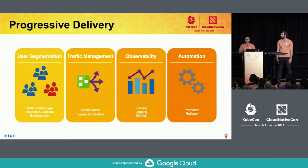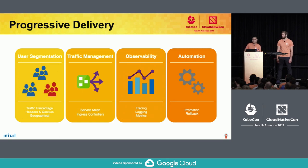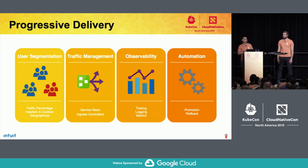There are four basic building blocks to progressive delivery. First is user segmentation — isolating a set of users to expose to the new version, controlling your blast radius, such as dialing in a traffic percentage or deploying to a geographical region. Second is traffic management — directing those users to the new version using things like service mesh and ingress controllers. Third is observability — tracing, logging, and metrics to measure whether the update is going smoothly. Fourth is automation — automatically progressing or aborting the update based on what was observed.